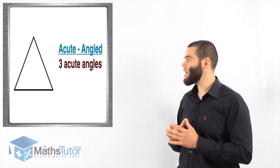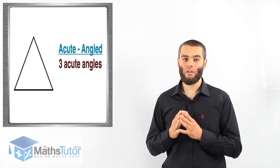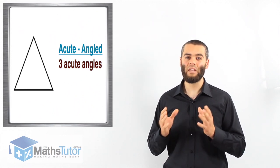Then we have the acute angle triangle. Acute angle means all the angles, the three angles in this triangle, are all going to be acute, less than 90 degrees each.